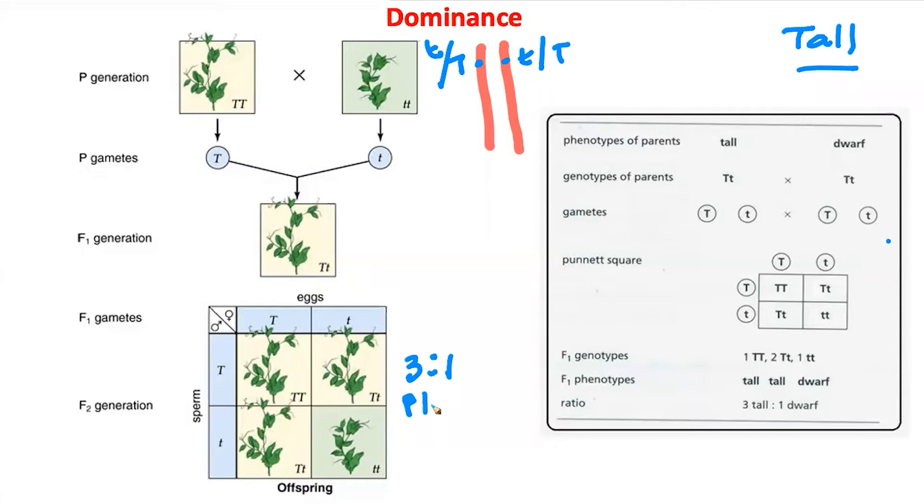This 3 to 1 ratio is what we term as the phenotype. When you visually look at the plant, there are three tall plants to one short plant. The genotype over here is actually 1 to 2 to 1. Even though the ratio is 3 to 1, when you look closely it is one TT, two Tt, and one tt. At the level of the gene, in terms of the allele set inside this plant, it is 1 to 2 to 1. This is the genotype and this is the phenotype.